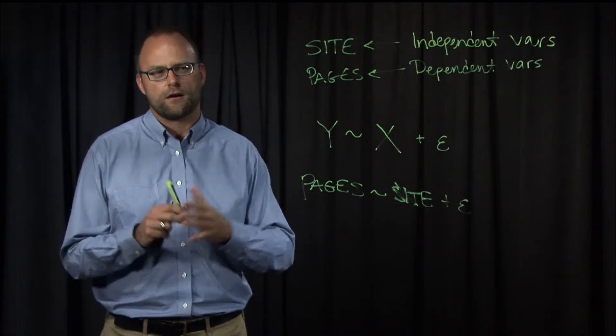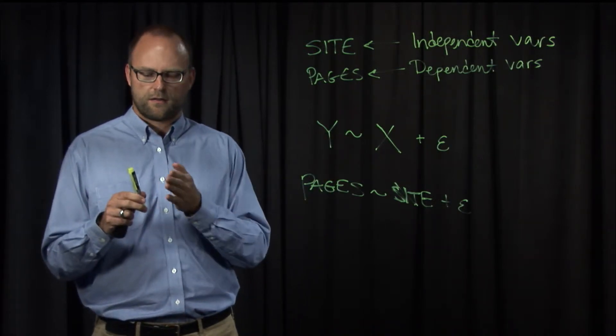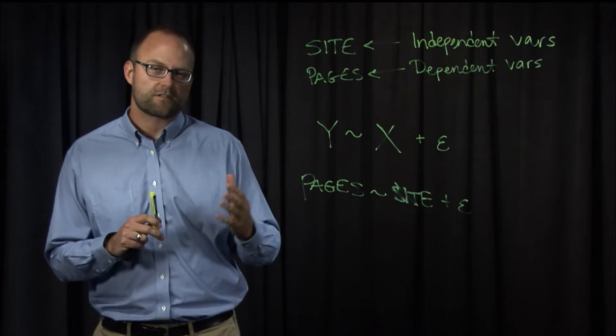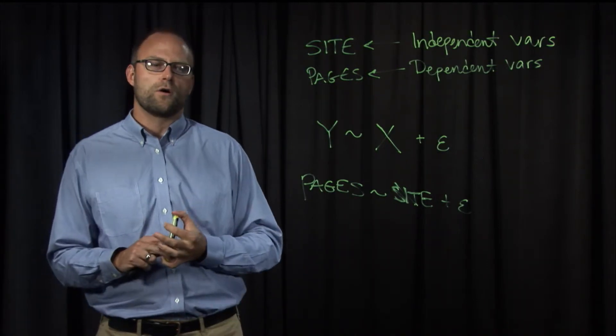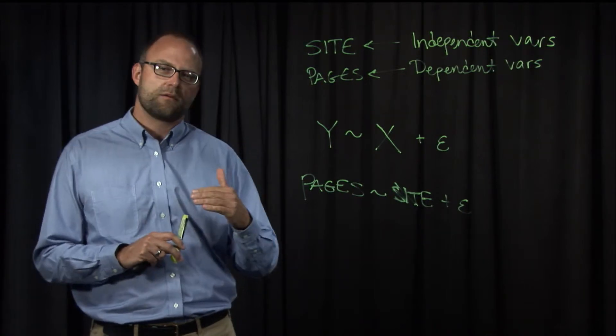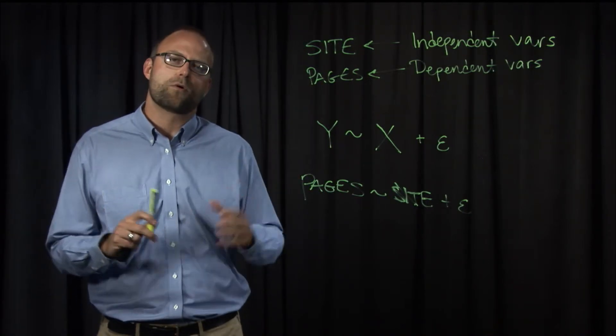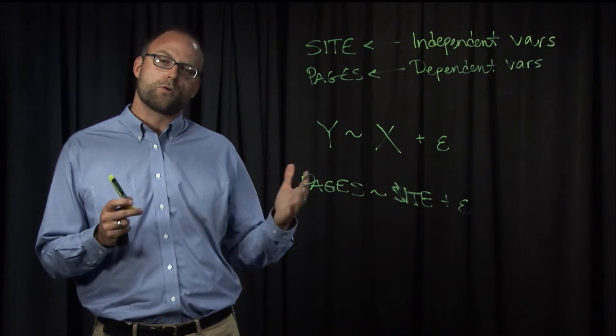And there's even a third type called ordinal or ordered, which are variables that are in a sequence that has an order, like a Likert scale, like a 1 to 7 scale, or a 1 to 5 scale, or short, medium, tall, taller, tallest. Things like that that have an order to them are called ordinal.